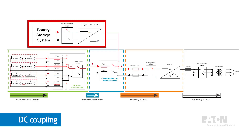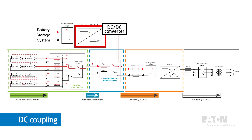DC coupling is when the battery storage system connects directly onto the same DC bus as the PV system before feeding the inverter. The current from the battery storage system goes through a DC-DC converter before connecting to the PV system. This type of connection tends to have higher initial installation costs, but will be more efficient over the life of the system. It's important to note that the circuit connecting the DC-DC converter output to the main PV system bus is considered part of the PV circuit and therefore must be a PV-listed device.